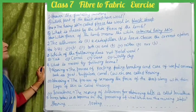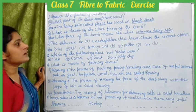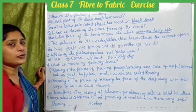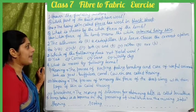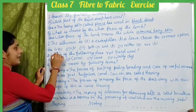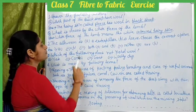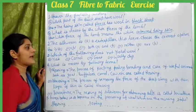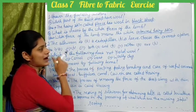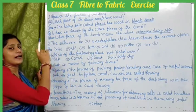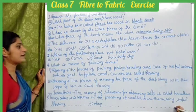The silkworm is: A) a caterpillar, B) a larva. You have to choose the correct option. The options are: one — A only, two — B only, three — both A and B, four — neither A nor B. The silkworm is both a caterpillar and a larva, so the right answer is option three.